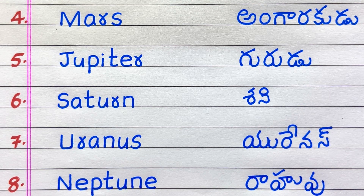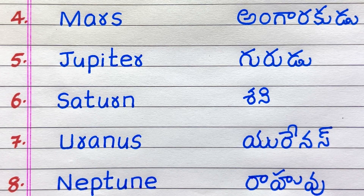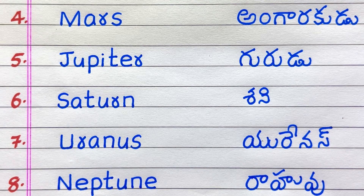5th, Jupiter — called Gurudu, otherwise called as Bruhaspati. 6th, Saturn — called Senni. 7th, Uranus — called Uranus in Telugu.